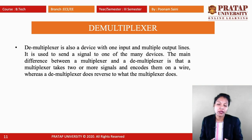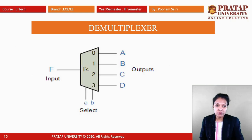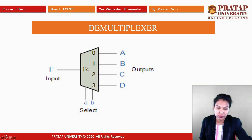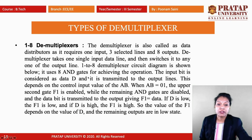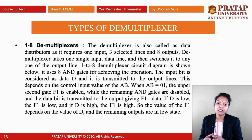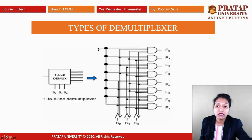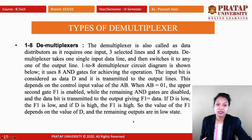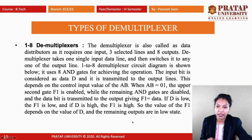The demultiplexer is the reverse process of the multiplexer. In the diagram, F is the single input with two or three select lines and many outputs. A 1-to-8 demultiplexer is called a data distributor — it requires one input, three select lines, and eight outputs F0 through F7. The demultiplexer takes one input data line and switches it to any one of the output lines.